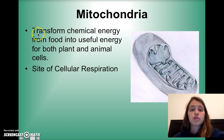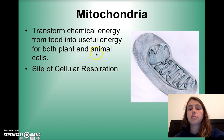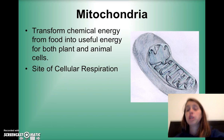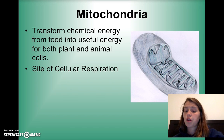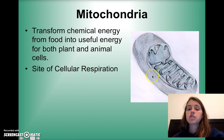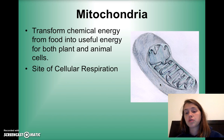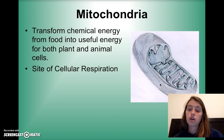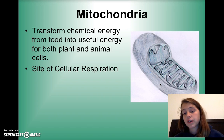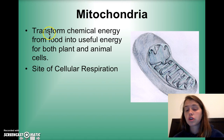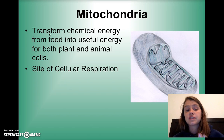Mitochondria transform chemical energy from food into useful energy for both plant and animal cells. This is the site of cellular respiration. When you eat, food breaks down into sugars or carbohydrates, and then the mitochondria takes those carbohydrates and transforms them into an energy form the cell can actually use, breaking that sugar down into usable energy.